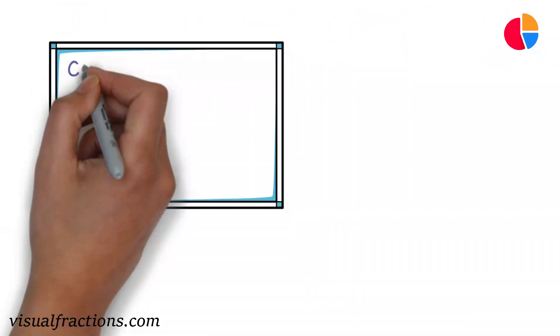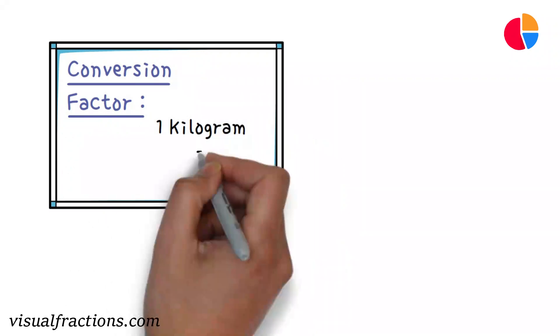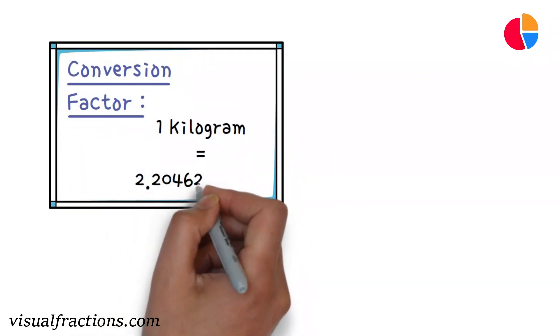First, let's review the conversion factor. 1 kilogram is equal to 2.20462 pounds.